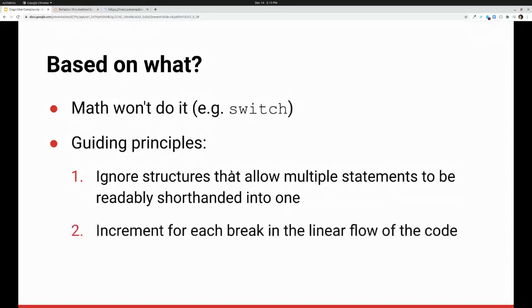What we don't ignore is breaks in the linear flow of the code. And what's behind this is the thought that ideally I would be able to read the code like I read a novel, left to right, top to bottom in an unbroken flow. When we hit things that break that flow, that makes me think harder, and so we're going to increment for that. And finally, we're going to increment when flow-breaking structures are nested. This will become more obvious momentarily.